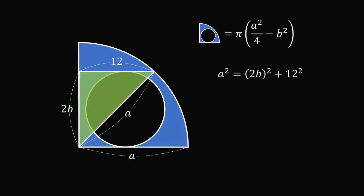Therefore, a squared is equal to 2b squared plus 12 squared. Simplifying this equation, then dividing both sides by 4, and then subtracting b squared from both sides, gives a squared over 4 minus b squared equals 36.